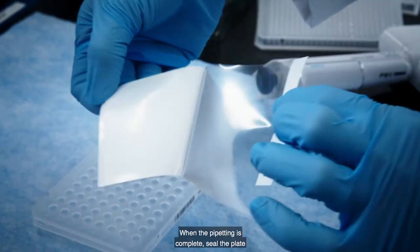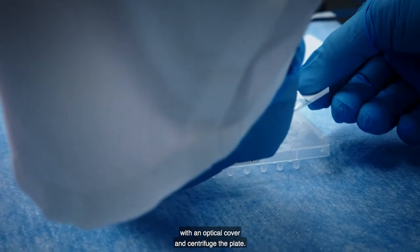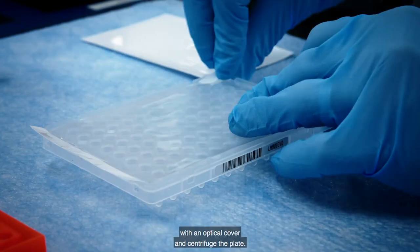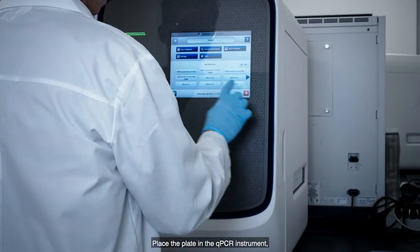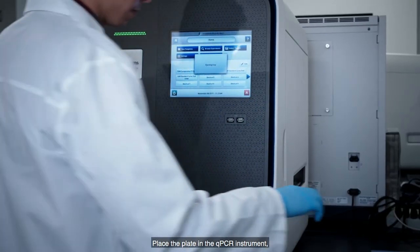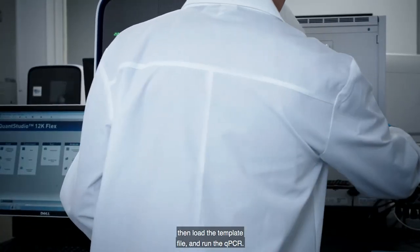When the pipetting is complete, seal the plate with an optical cover and centrifuge the plate. Place the plate in the qPCR instrument, then load the template file and run the qPCR.